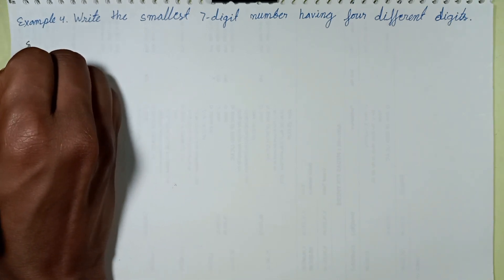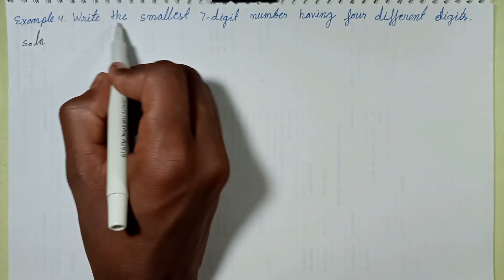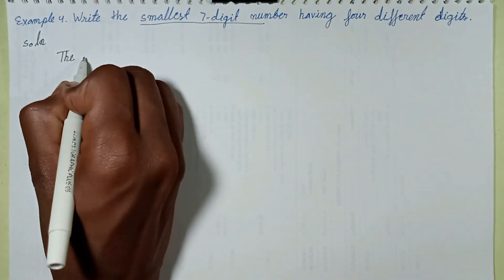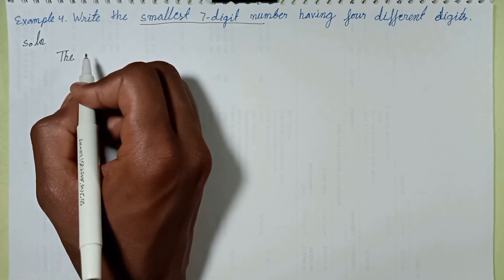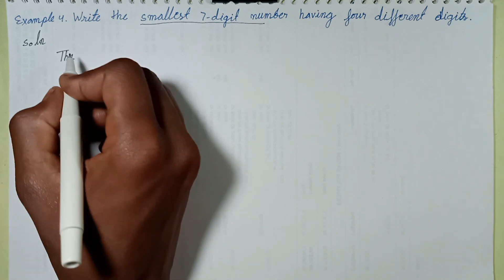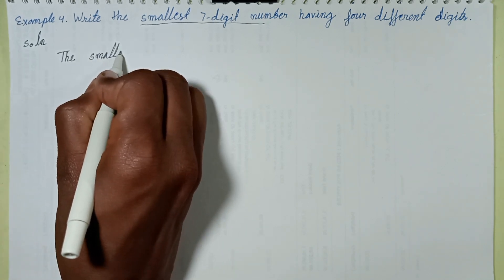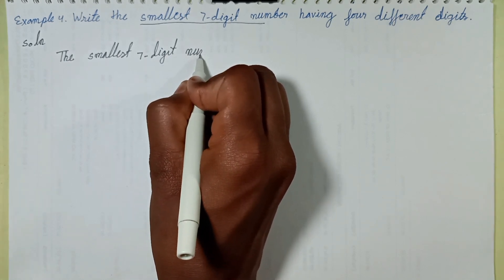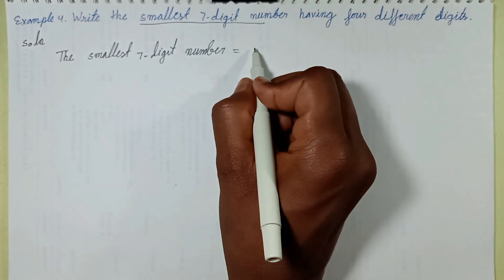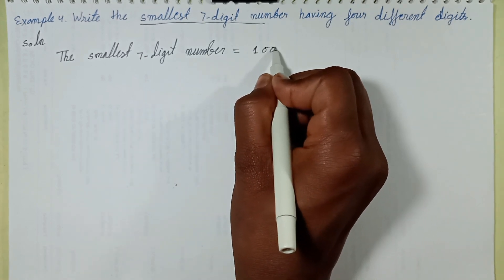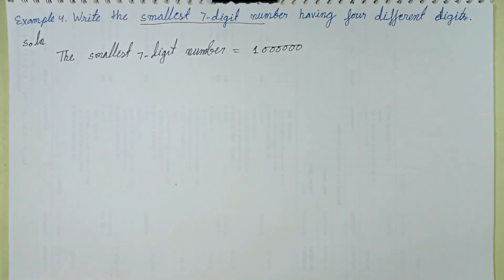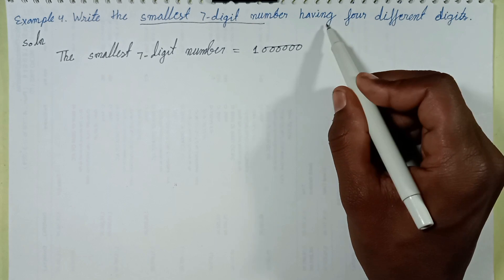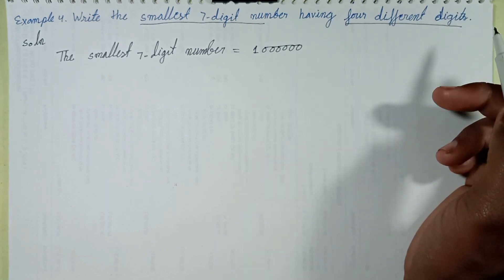First of all, write the smallest seven digit number. The smallest seven digit number is 1,000,000 — that is one followed by six zeros. This is the smallest seven digit number. Now find having four different digits — how many digits are there?